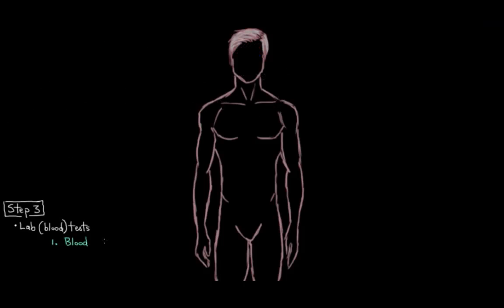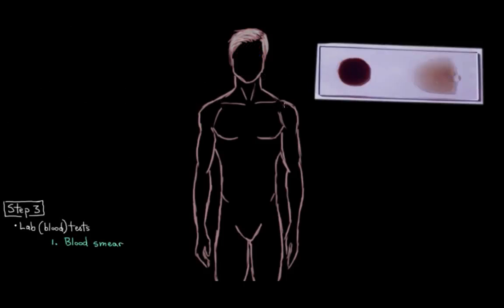One way is by a blood smear. We take some blood from the person and we stick it on a microscope slide. You can see my nice microscope slide here with blood on it. And then we look at it under a microscope to try to directly, visually pick out any malaria parasites, using our own two eyes.